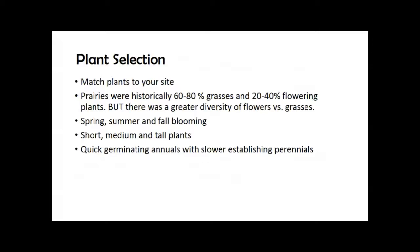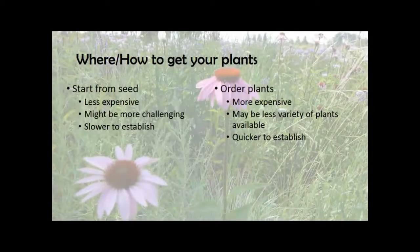For plant selection, match plants to your site. Historically, prairies were 60 to 80 percent grasses and 20 to 40 percent flowering plants — that was the goal at NDSU. Interestingly, there are greater numbers of flower species but fewer grass species. You want plants that bloom spring, summer, and fall, and short, medium, and tall plants. If seeding, use quick-germinating annuals alongside slower-establishing perennials, since many perennials need cold wet periods to germinate.